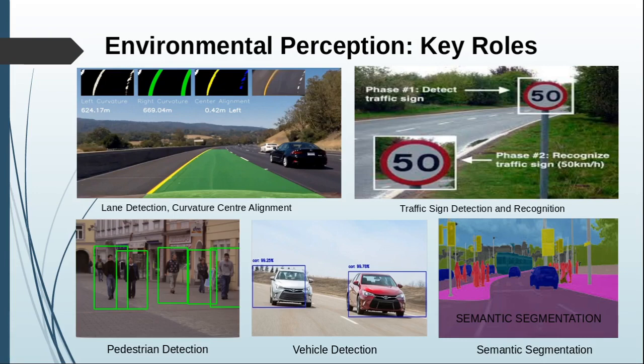Next I will move on to the next component: environmental perception. So far I have been talking about how we can obtain and combine relevant information from different sensors mounted on the car. Now I will talk about the analysis part — after getting the information, how we can exactly analyze which is relevant and which obstacle might cause hurdles for driving. A few examples are lane detection, curvature, and center alignment.